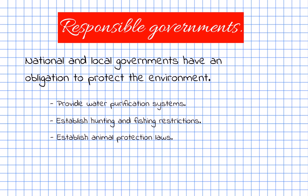Let's talk about responsible governments. National and local governments have an obligation to protect the environment. They can provide water purification systems, establish hunting and fishing restrictions, and establish animal protection laws.